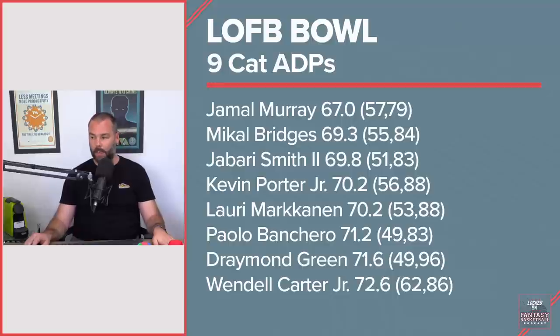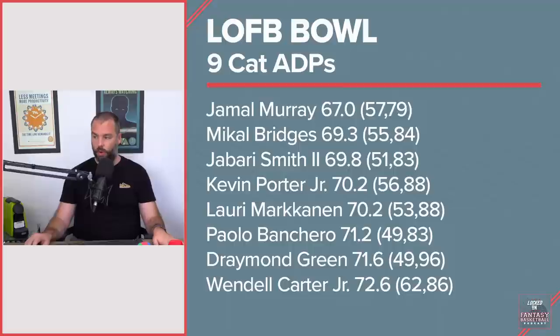Markkanen went at 70 average — highest of 53 and lowest of 88. There's a Josh Lloyd impact in that, I'm pretty sure. Paolo Banchero at 71.2, up to 49 — that is way too high for Paolo. His lowest spot was 83, which is probably too low.